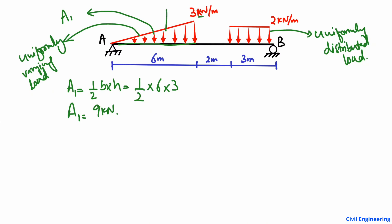This 9 kN point load will act at the centroid of the triangle. Now we will find the area of the second load — I call it A2. It is a rectangle, so A2 equals base times height. The base is 3 meters and the height is 2 kilonewtons per meter, giving A2 = 6 kilonewtons. This 6 kN will act at the centroid of the rectangular load.